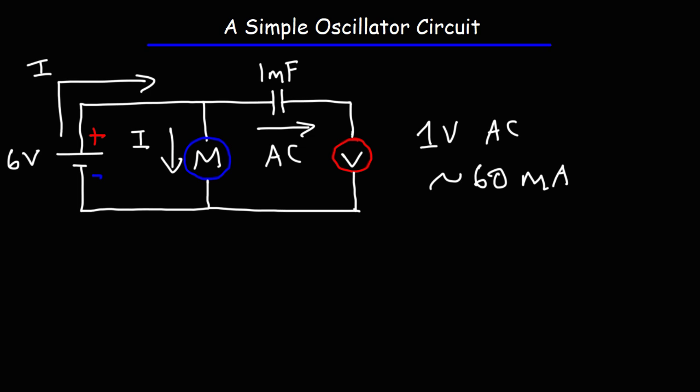Now, the frequency, the voltage, and the current that is measured by the digital multimeter does depend on the type of motor that you use. Notice what happens when I use a different type of motor.